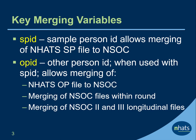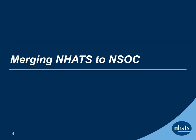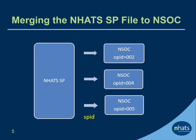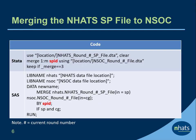Let's take a look at some examples of merging NSOC. We will start with merging NHATS to NSOC files. To merge NHATS SP characteristics to NSOC, use SPID and a 1-to-many merge. Here we show Stata and SAS code. When merging NHATS SP files with NSOC files, the ID variable used is SPID. Note that in Stata code it is a 1-to-m merge. In SAS, both data files are included in the if statement.